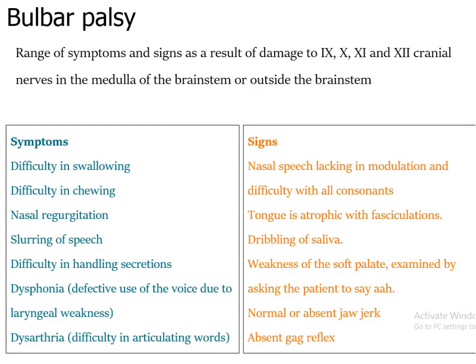Bulbar palsy: bulbar refers to the medulla of the brain stem. In bulbar palsy, the lower cranial nerves — 9, 10, 11, and 12 — having their nuclei in the medulla, are affected. Patients have difficulty in swallowing, difficulty in chewing, nasal regurgitation, slurring of speech, and difficulty in articulating words. During examination, one can notice absent gag reflexes, weakness of the soft palate, and dribbling of saliva.